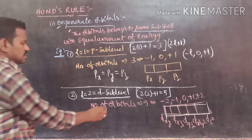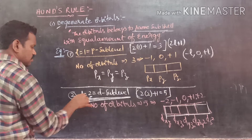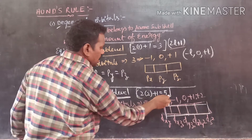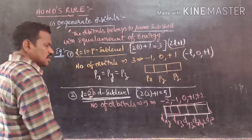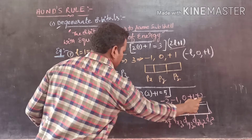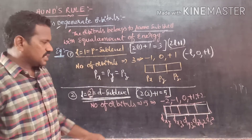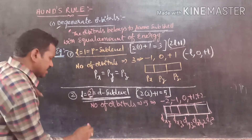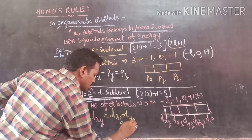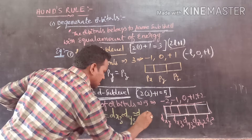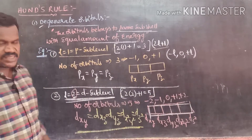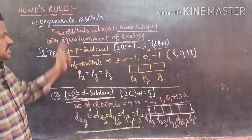For the second example, the D sublevel has L equal to 2. By applying the formula 2L plus 1, the number of orbitals is 5. The five magnetic quantum number values are minus 2, minus 1, 0, plus 1, and plus 2. These 5 orbitals are represented as Dxy, Dxz, Dyz, Dx²y², and Dz². The energy of all five orbitals is the same, so they are called degenerate orbitals.